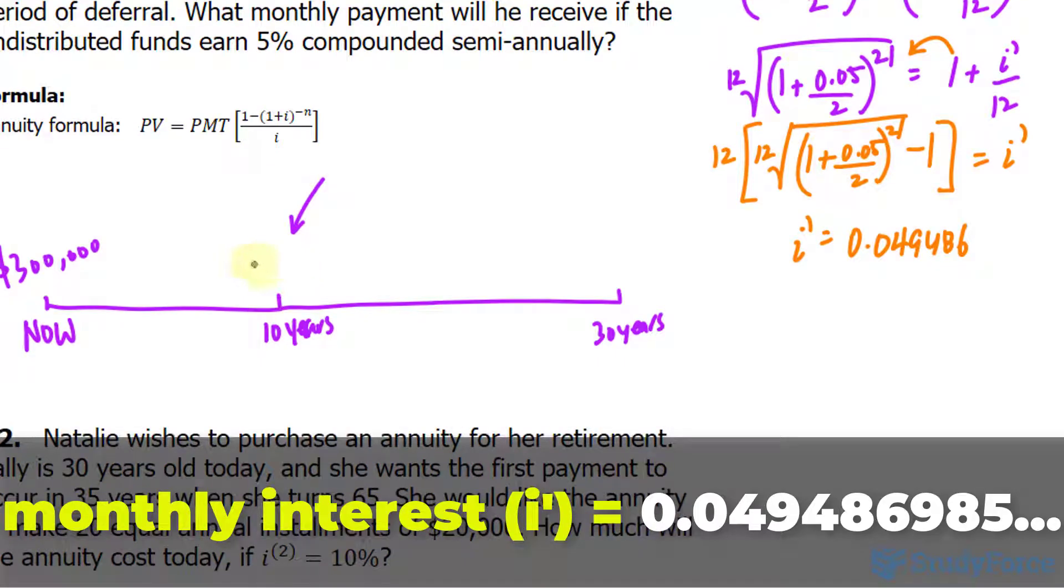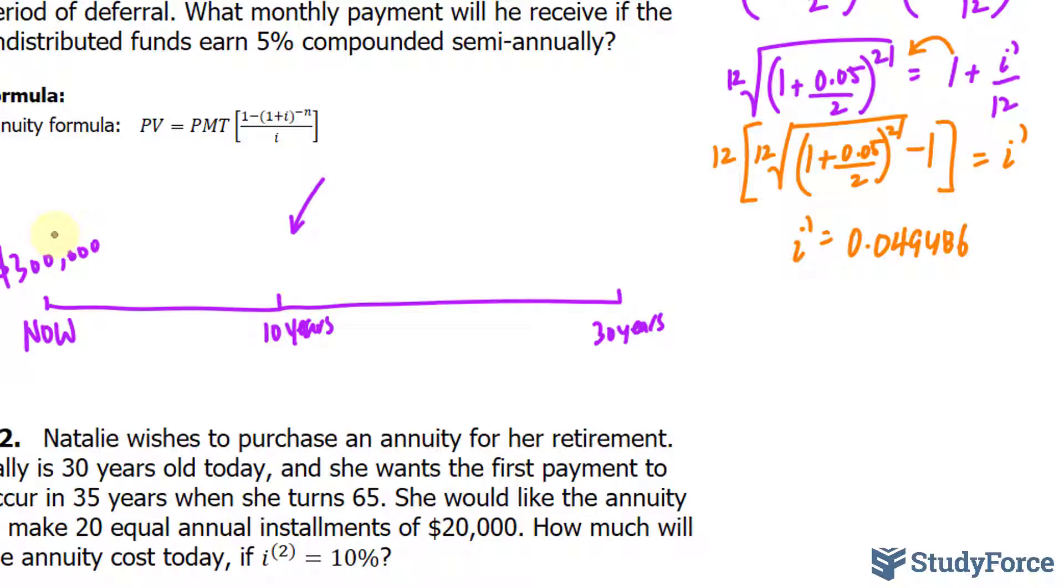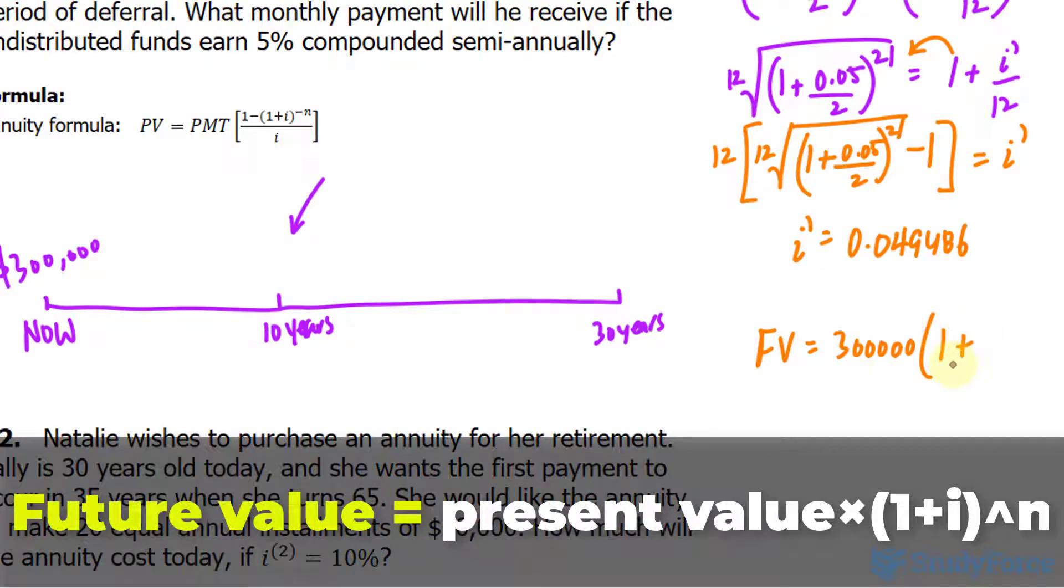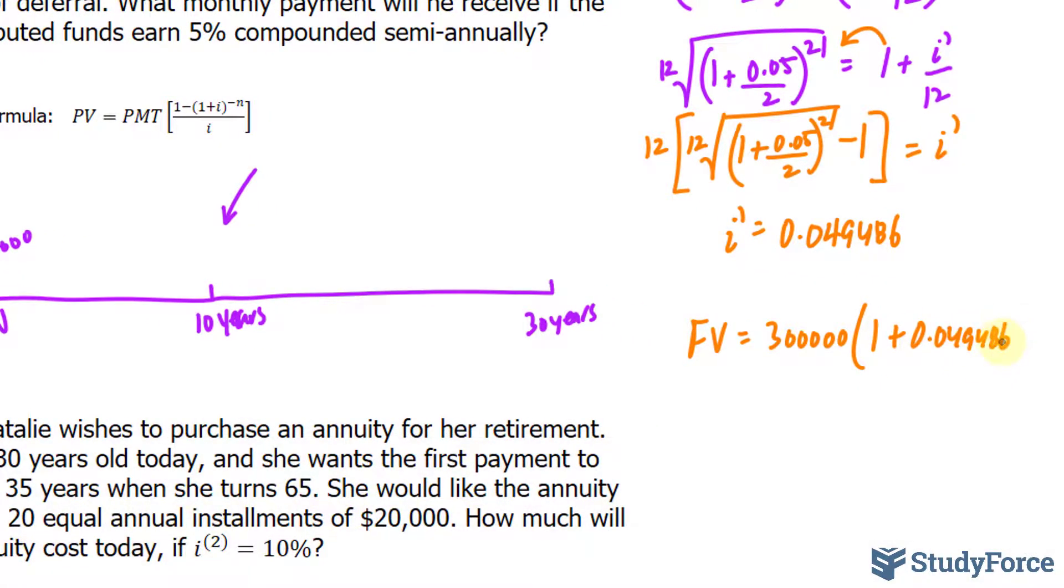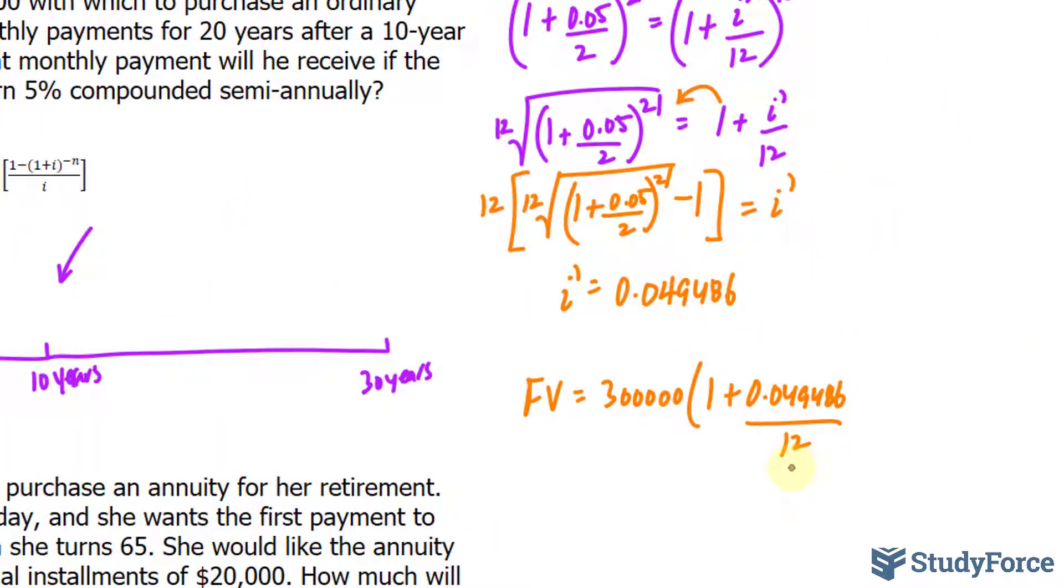Now we'll find out what 300,000 becomes 10 years from today. The future value is equal to 300,000 multiplied to 1 plus the interest rate that we just found, 0.049486. Divide that by 12 because it is being received every month of the year. And to find out the n value, we'll be using n is equal to 10 years times 12 periods per year. And that is equal to 120.